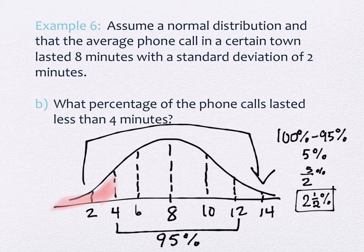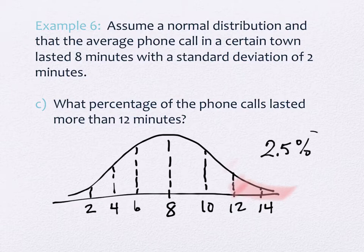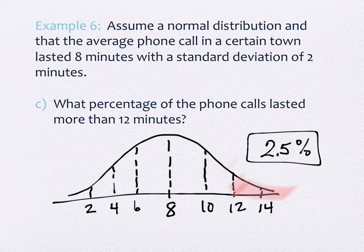One more question. What percentage of the phone calls lasted more than 12 minutes? So we'll shade over here. It will be the same thing - it's the other tail that I didn't have before. So again, 2.5%. So you're always basing everything on the fact that there's 100% of the data underneath that curve, and then you have these marks to give you guidelines for the 68, the 95, and the 99.8 that fall within that.